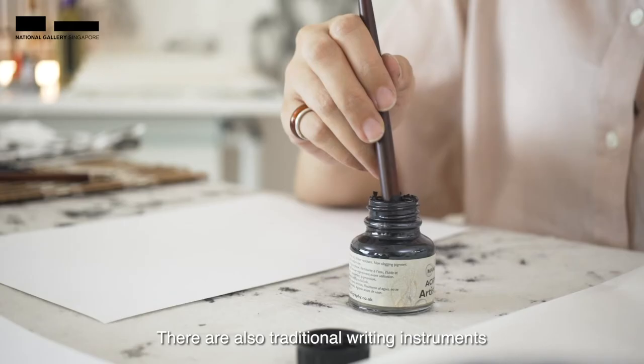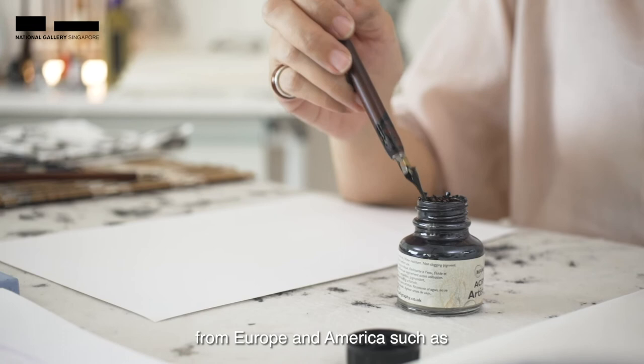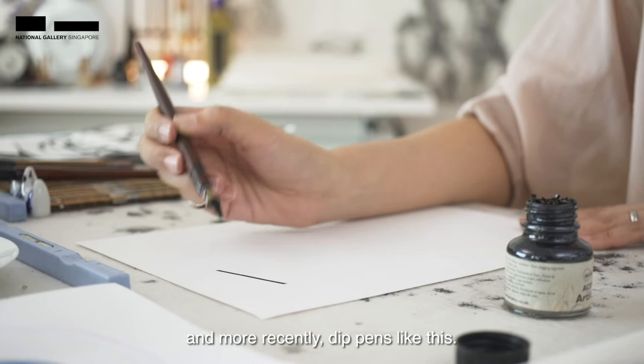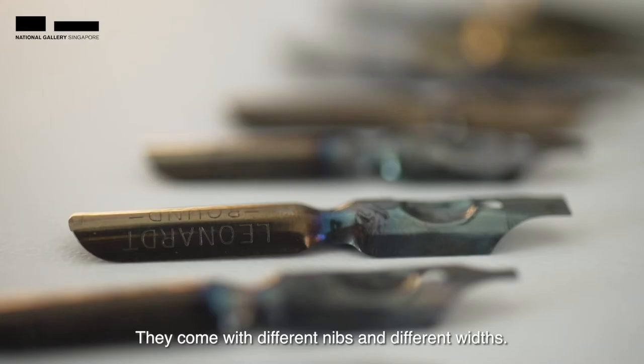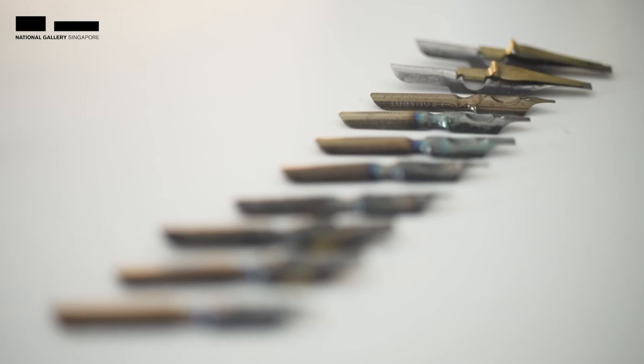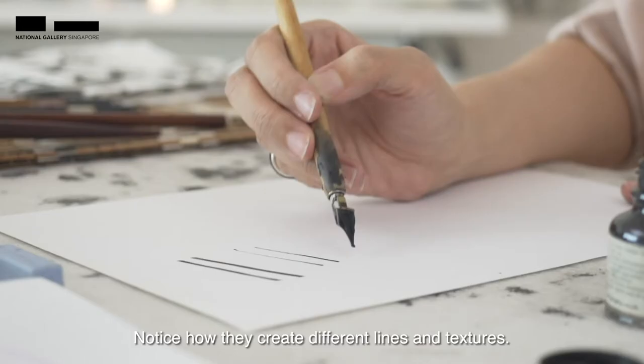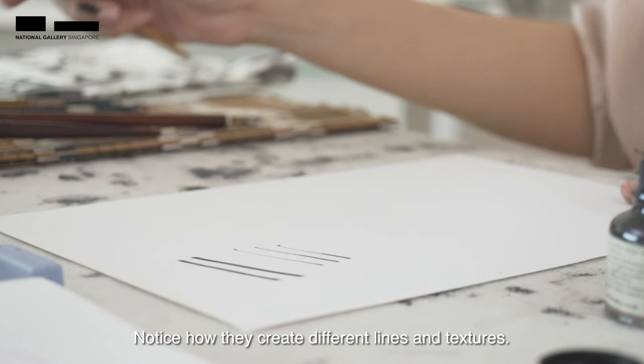There are also traditional writing instruments from Europe and America, such as quills and more recently, dip pens like this. They come with different nibs and different widths. Notice how they create different lines and textures.